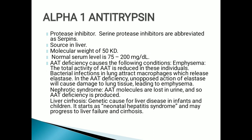Alpha-1 antitrypsin is a protease inhibitor; its source is the liver. Normal serum level is 75 to 200 mg/dL. Its deficiency leads to emphysema; it is rare in Asia and more common in Europe. In bacterial infections, macrophages are called to the site and release elastase; unopposed action of elastase leads to lung damage. Alpha-1 antitrypsin combats elastase released by neutrophils and macrophages, and when it is absent the lung gets damaged.